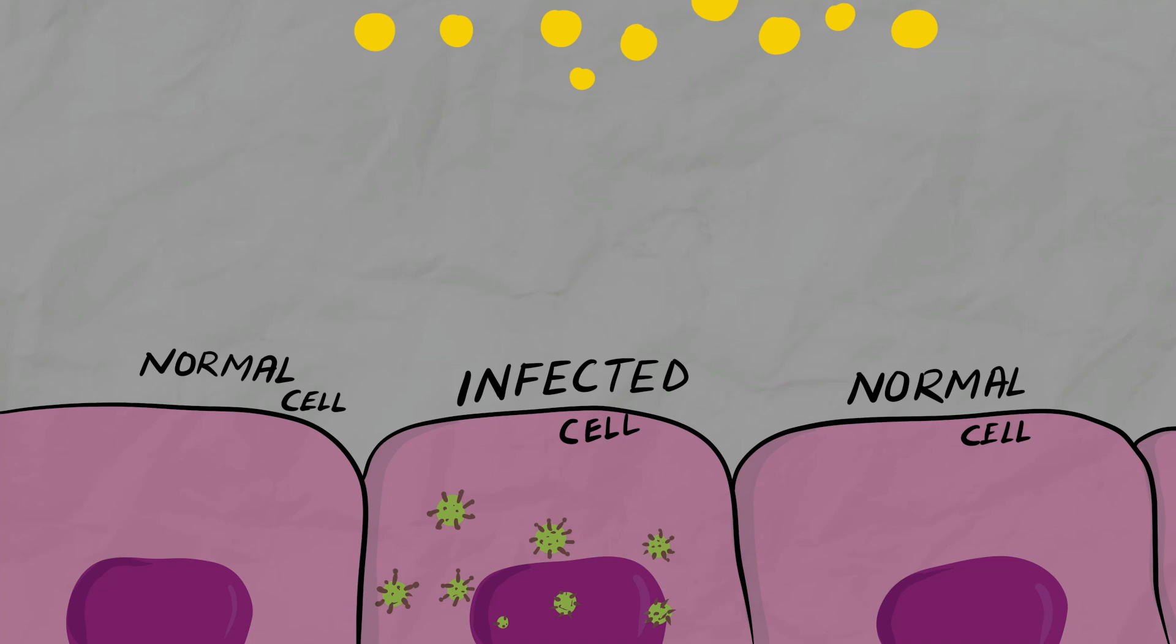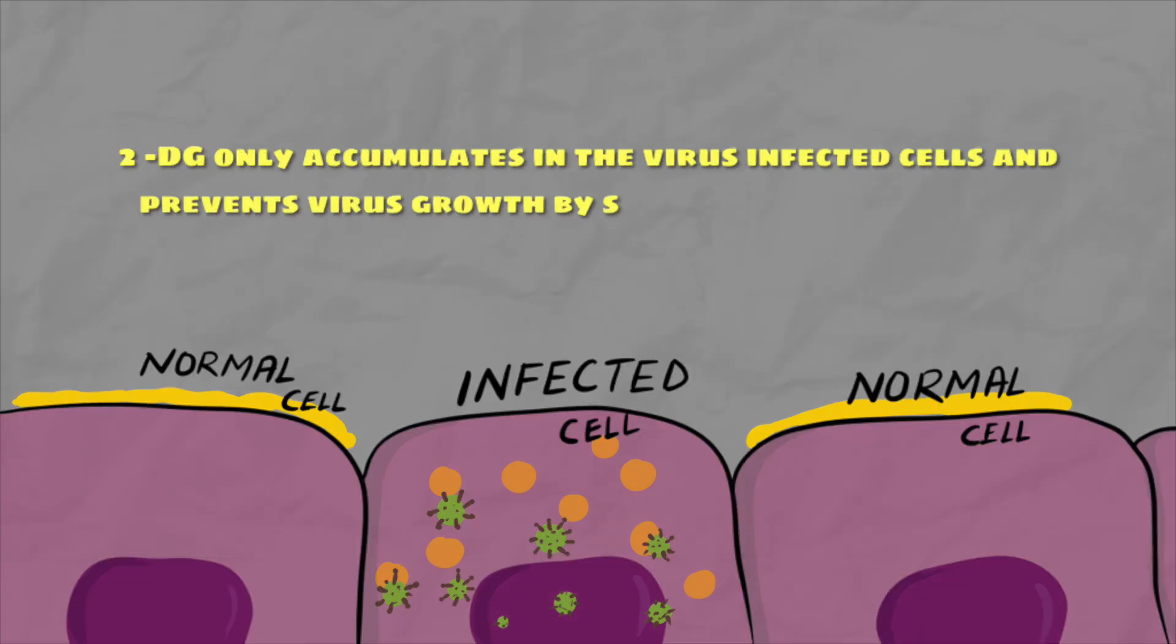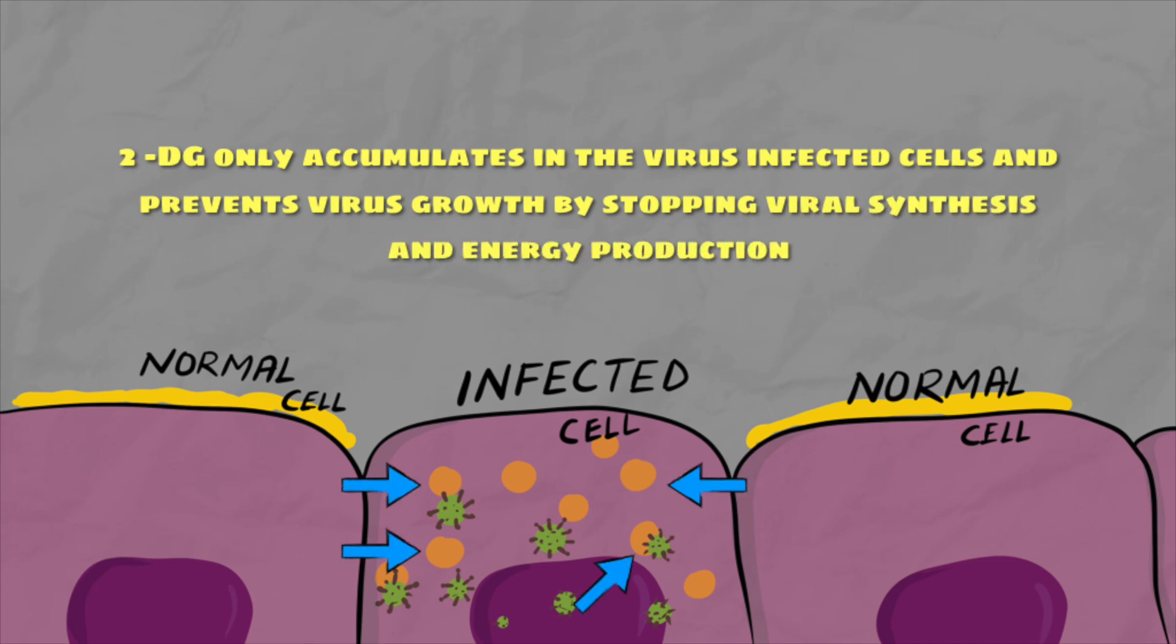Let's see how it works. You can see two types of cells here: one is virus-infected and the other is a normal cell. 2-DG only accumulates in the virus-infected cells and prevents virus growth by stopping viral synthesis and energy production. Its selective accumulation in virally infected cells makes this drug unique.